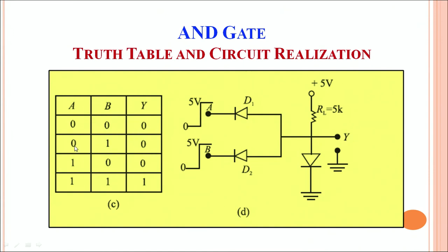When one input is zero and the other is one, either D1 or D2 remains in a short (conducting) state, so current flows and the output Y is zero. Only when both A and B are connected to high potential — giving input 1,1 — is current blocked through the diodes and the output across Y is measured as 1. This is how an AND gate is realized using diodes.